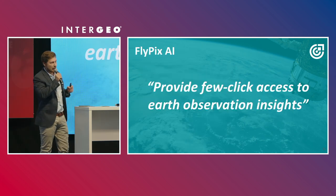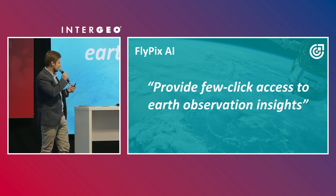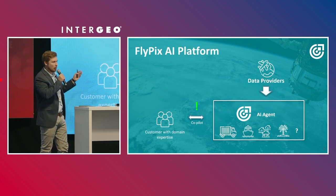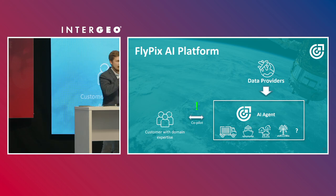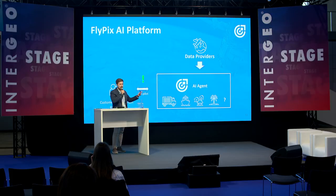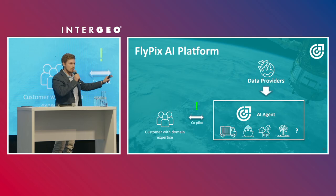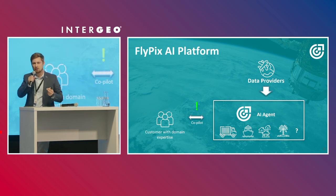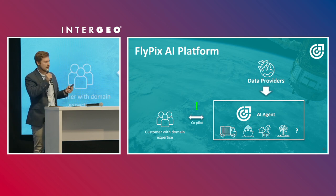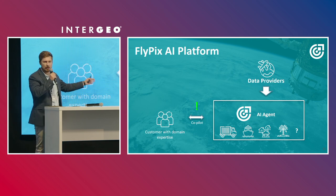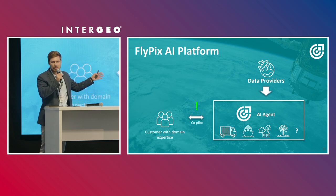At Flypix, we provide a few-click access to Earth observation insights. We built an AI agent — it's based on artificial intelligence, though different from what the previous speaker discussed. This AI agent already knows a lot about different objects, areas, and classes. For example, out of the box it can detect vehicles, vessels, trees, and some other objects.